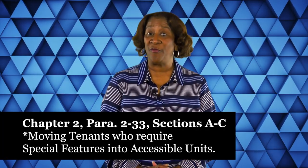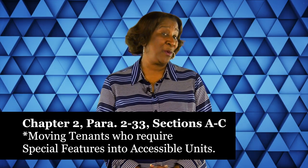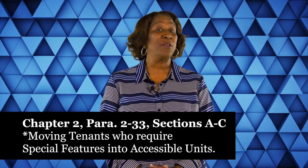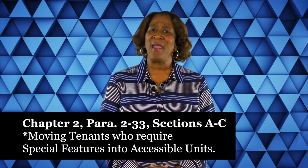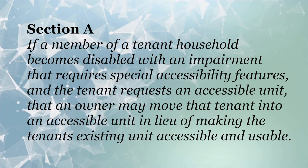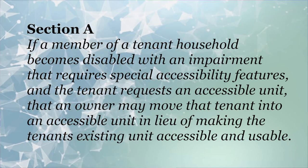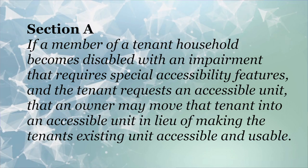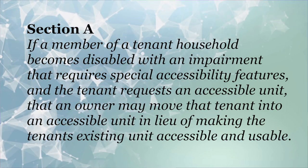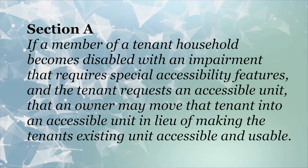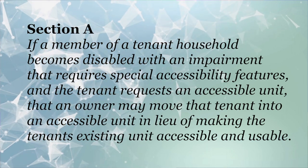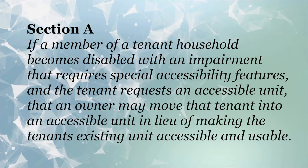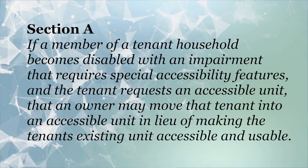Today's tip can be found under Moving Tenants Who Require Special Features into Accessible Units in Chapter 2, Paragraph 2-33, Sections A, B, and C. Under Section A, it states: if a member of a tenant household becomes disabled with an impairment that requires special accessibility features and the tenant requests an accessible unit, an owner may move that tenant into an accessible unit in lieu of making the tenant's existing unit accessible and usable.